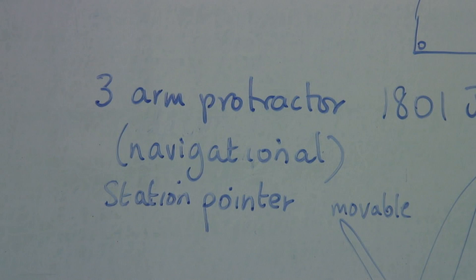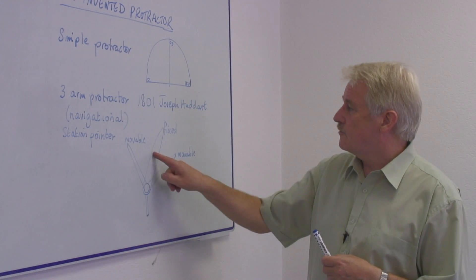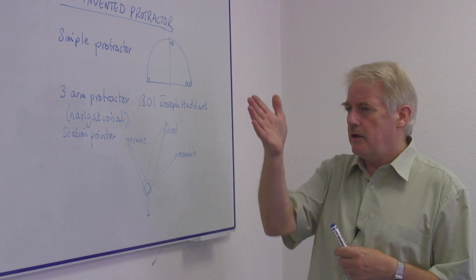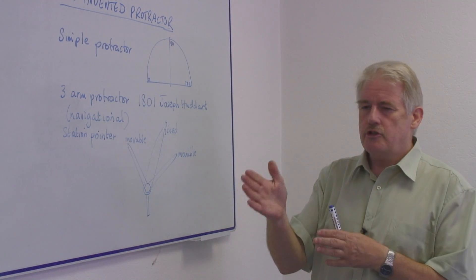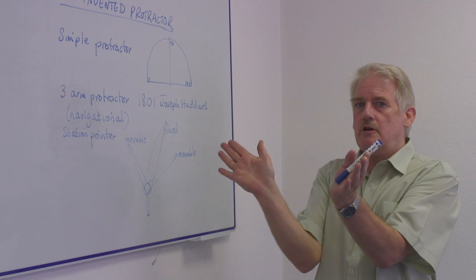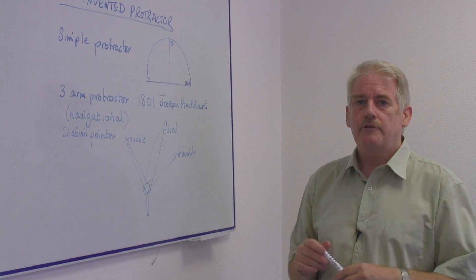It consisted of a fixed arm with two moveable arms, and the idea was to fix one of the arms on a point on the horizon or an object on a chart, and then move the other two pointers to two other objects on the chart, measure the angles, it gave the position of the ship.